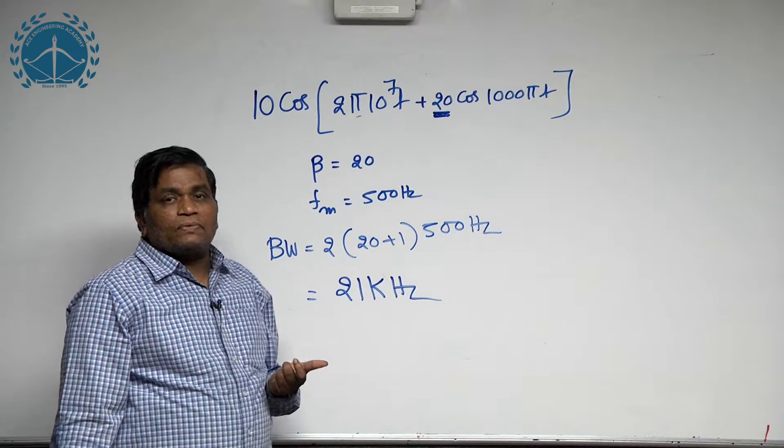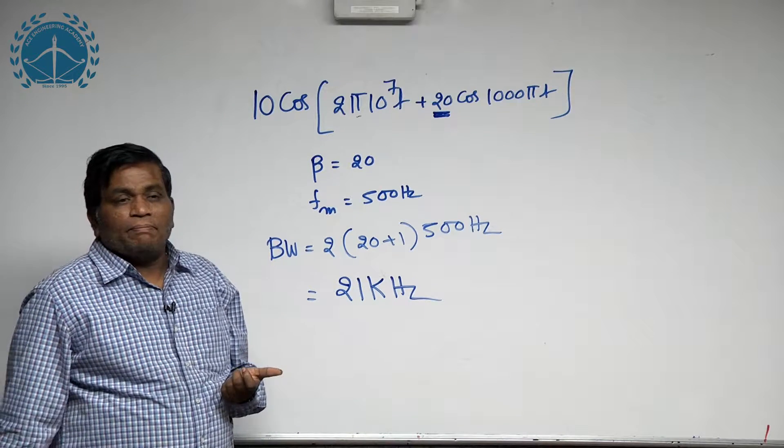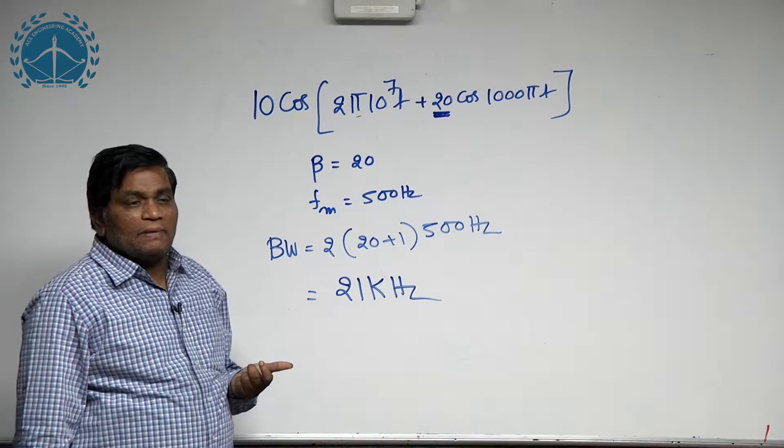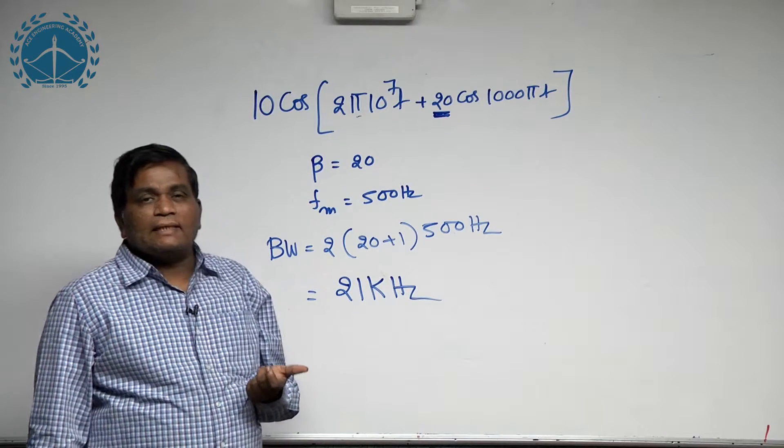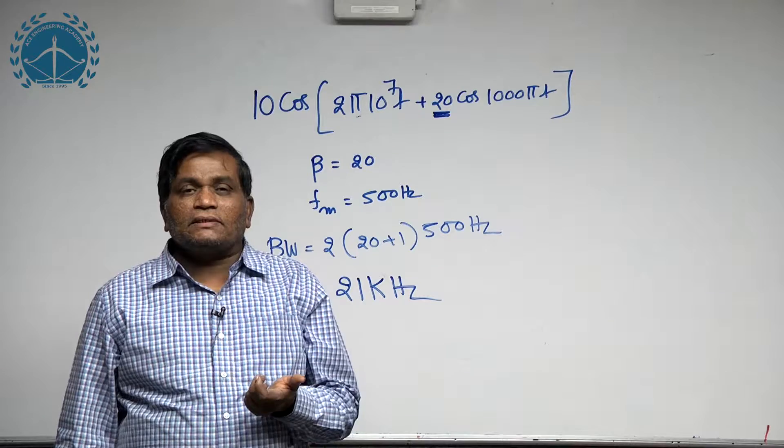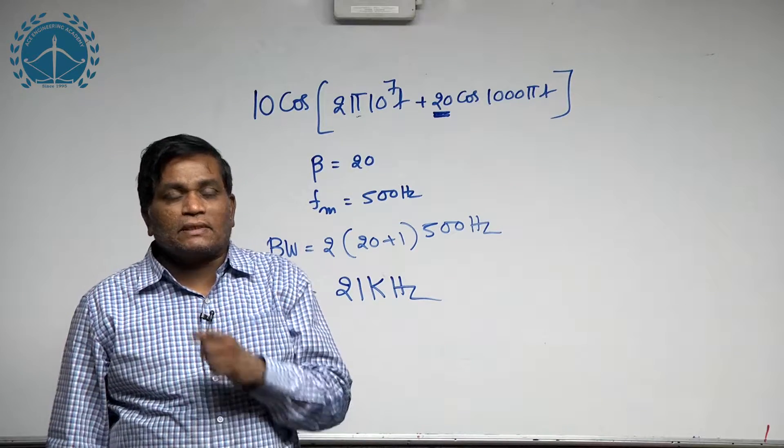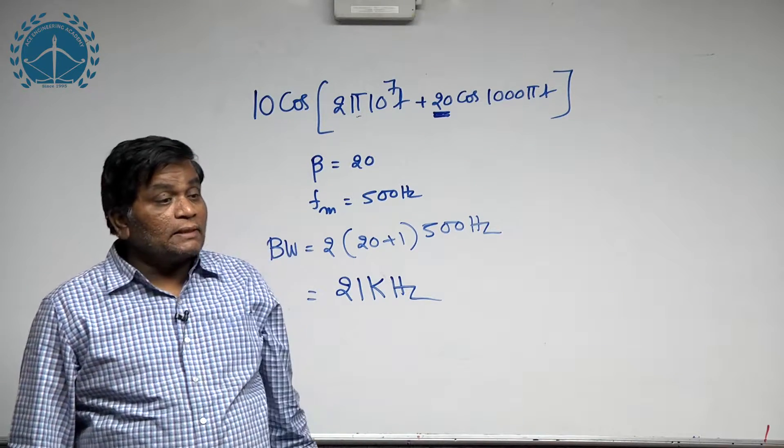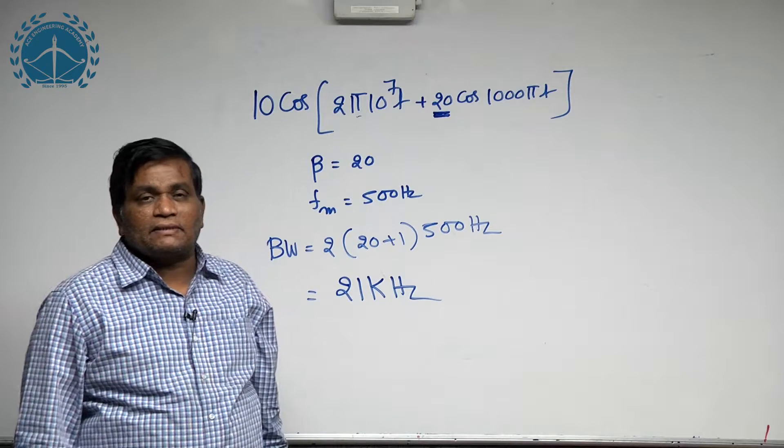There are various formulas to determine the bandwidth of any angle modulated signal. Angle modulation means it can be frequency modulation or it can be phase modulation, but in both cases the formula for bandwidth remains the same.